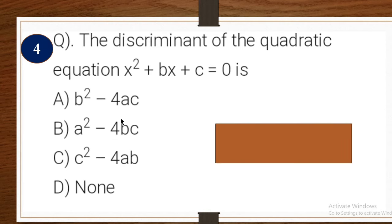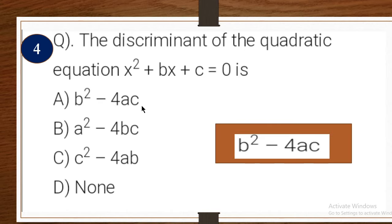Fourth one: the discriminant of the quadratic equation x² + bx + c = 0. This is also a direct question. The discriminant is b² − 4ac. That is the correct answer.